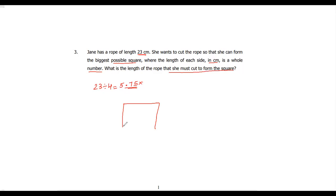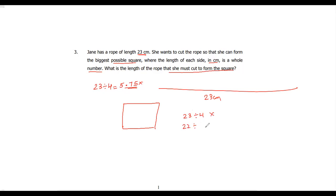You have a long rope of 23 centimeters and want to cut it to get a square. The property of a square is all sides are equal, so the sides have to be a multiple of 4. Starting from 23 going backwards: 23 is not divisible by 4, 22 is not, 21 is not, but 20 is divisible by 4, giving 5. So each side is 5 centimeters and she should cut it at 20 centimeters.